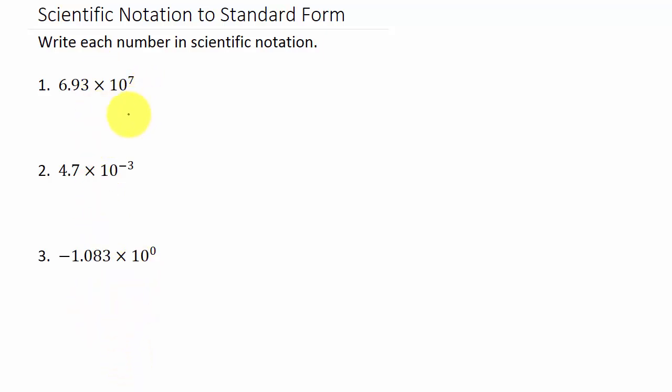Alright, so it's really simple. If the exponent is positive, you move the decimal to the right. If the exponent is negative, you move the decimal to the left.